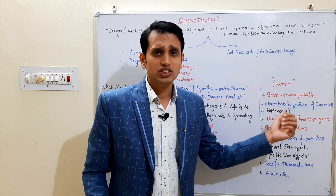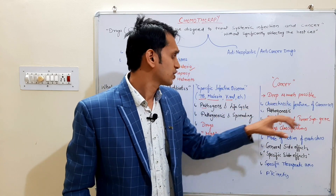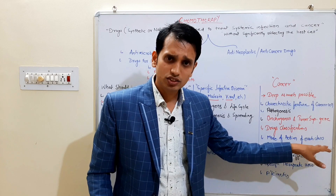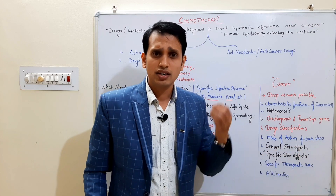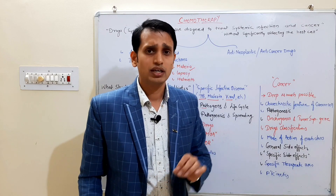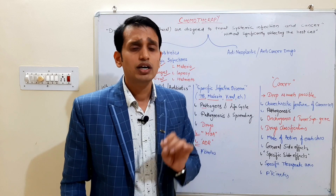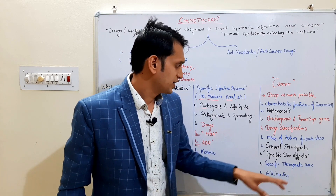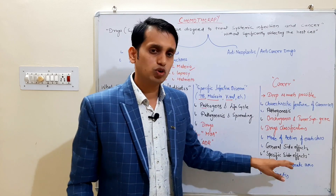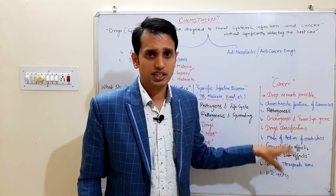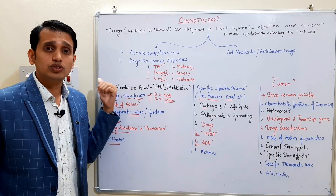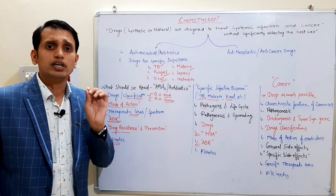For cancer, we will discuss oncogenes, anti-oncogenes, and tumor suppressor genes in detail. Key study points for anti-cancer drugs include: drug classification — which is the most important; mode of action of each drug class; general side effects like baldness, impotency, and bone marrow suppression; specific side effects such as bladder damage; specific therapeutic use — which cancers can be treated; and pharmacokinetics of anti-cancer drugs.